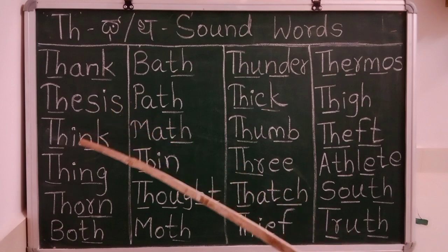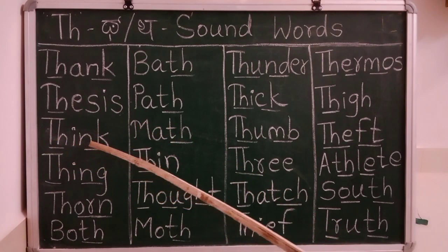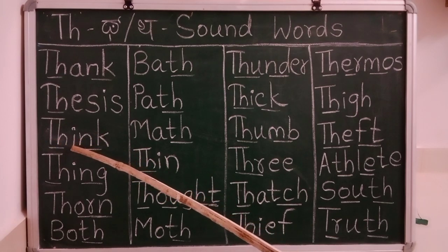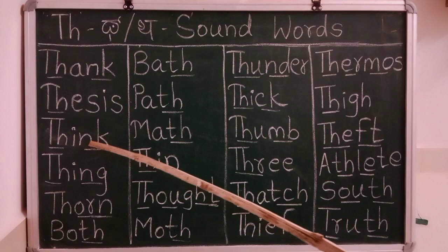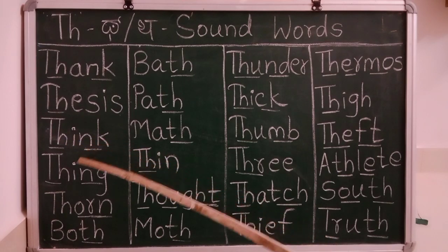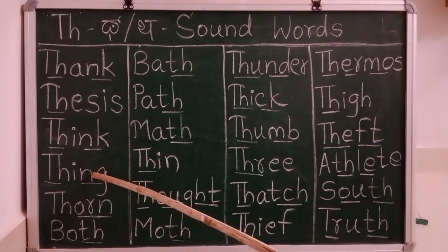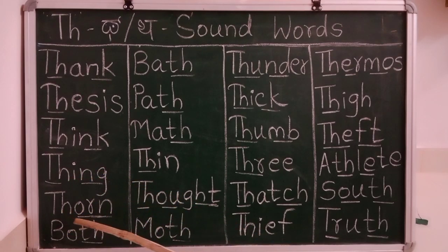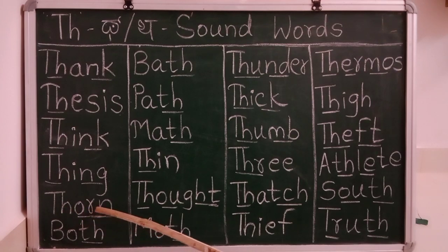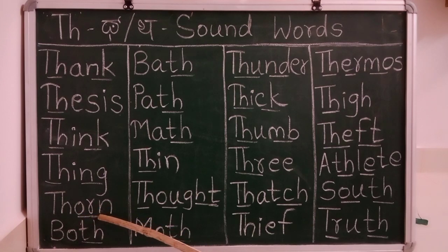Th-I-N-K. Th-I sound E, N sound N, K sound K. Th-I-N-K. Think. Th-I-N-G. Think, thing, thing. Th-O-R-N. Th-O-R-N. Thorn, thorn, thorn. B-O-Th. Both. B-O-Th. Both, both.